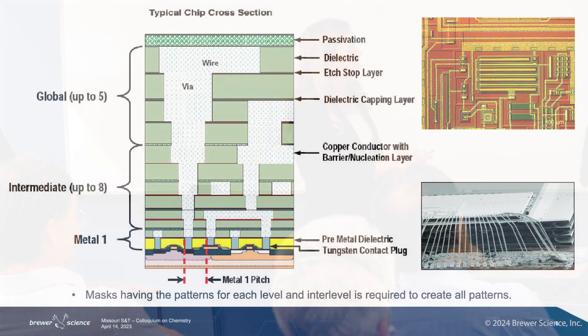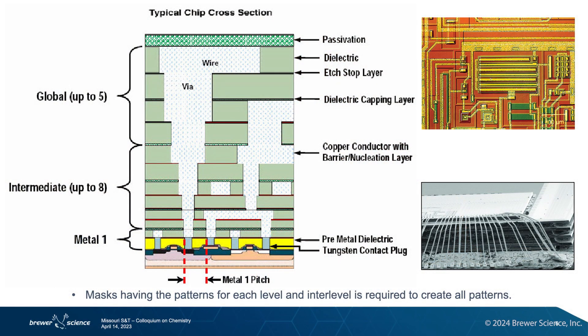So what is all of that going into? This is a cross-section of a typical kind of device, and we start at the very bottom here where we've got the gate, the source, the drain, the body — the basic transistor — and so that we have to print first.